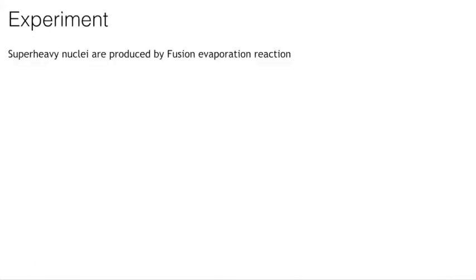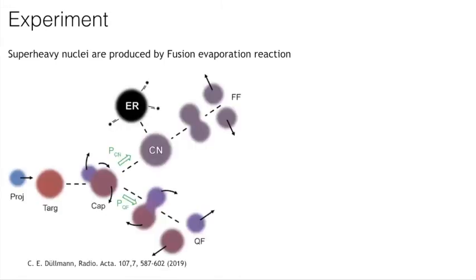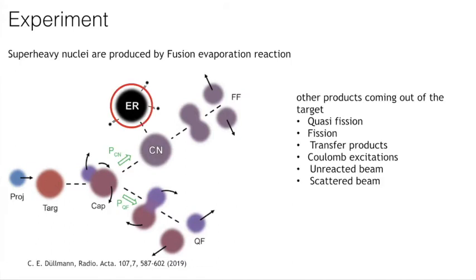Now I come to the experiment. Super-heavy nuclei are produced by fusion-evaporation reactions. In this reaction, two lighter nuclei are fused to form a compound nucleus which then cools down by emitting neutrons and gamma rays, and the final product is called the fusion-evaporation residue. However, this is the most unlikely outcome, as other dominating reactions like quasi-fission, fission, transfer products, and scattered beams are present. Our nuclei of interest are like needles in a haystack — that is why we need a good separator.